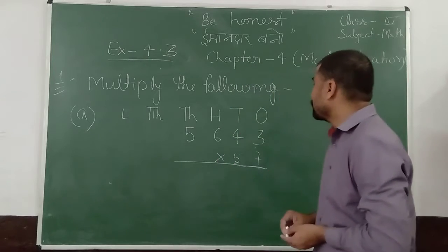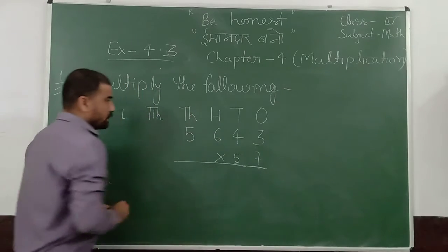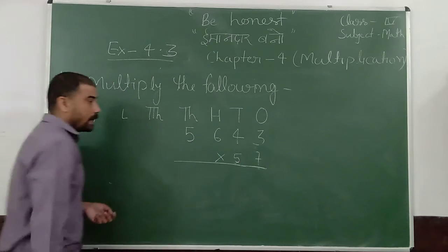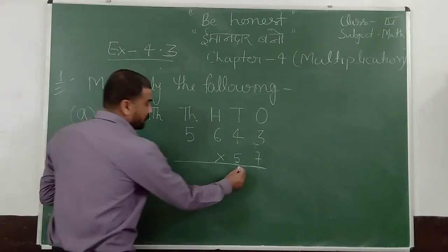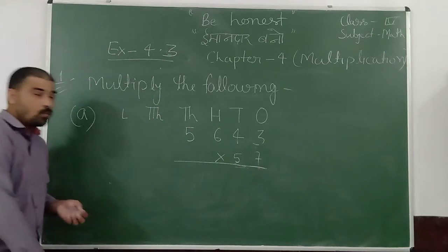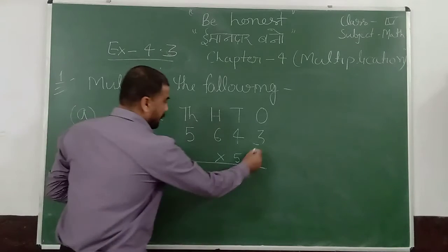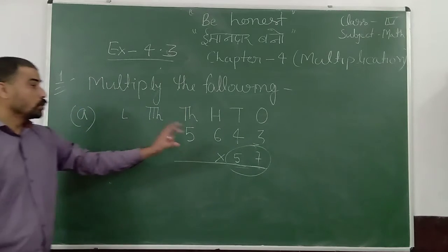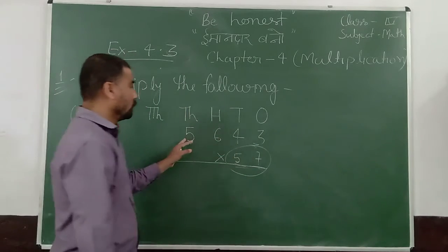In this exercise we have to multiply the numbers. There is a number 5,643. And we have to multiply by 57. 57 has 1 and 10 digits. It just has 2 digits. So we have to multiply 2 digits on 4 numbers.